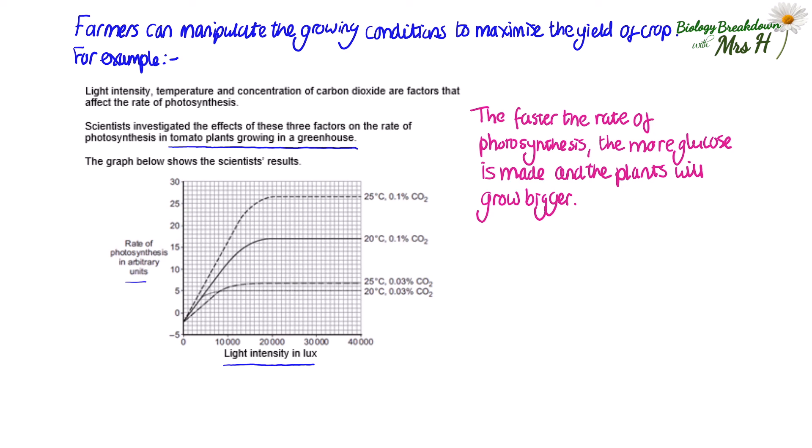At a concentration of carbon dioxide at 0.03%, there is not much difference in the rate of photosynthesis at 20 degrees C or 25 degrees C. However, there is a very large difference in the rate of photosynthesis once the carbon dioxide concentration is increased from 0.03% to 0.1%.